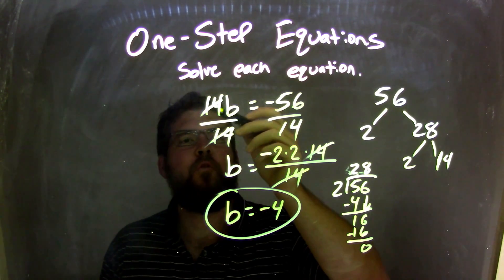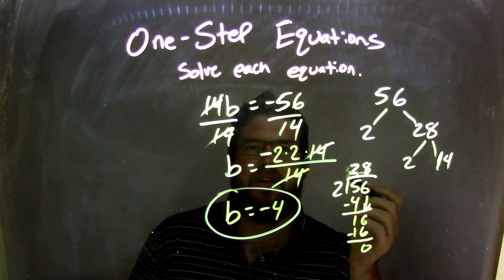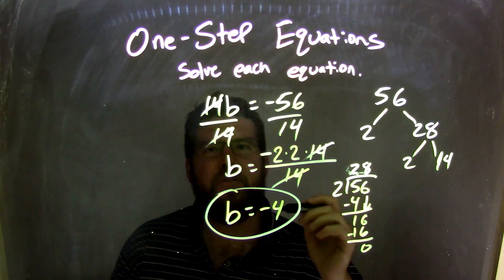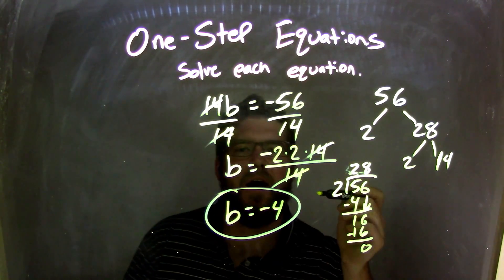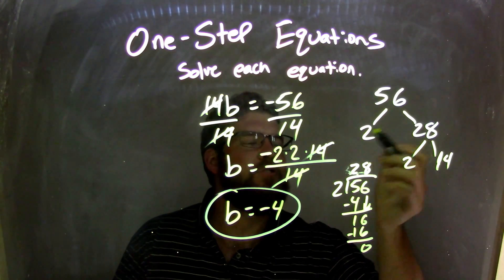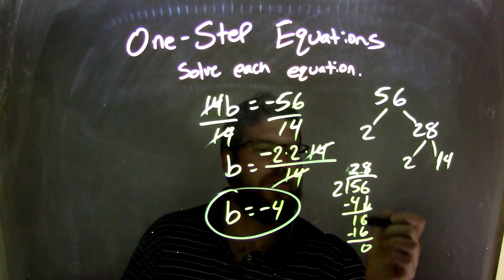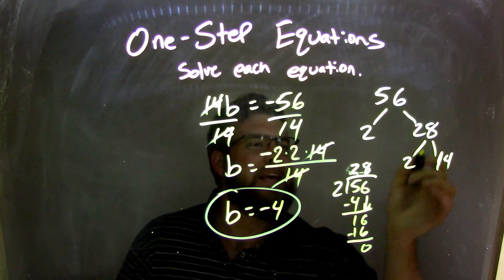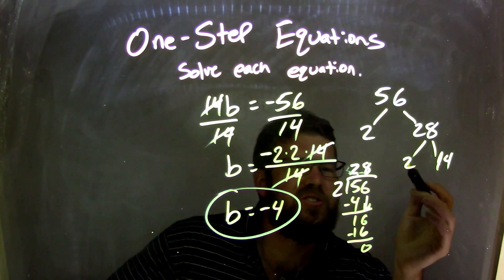So let's recap. I have 14b equals negative 56. Opposite of multiplication is division, so I divide by 14 on both sides. So we have negative 56 divided by 14. 56 I broke down to be 2 and 28. We were doing some long division here. 28 I saw to be 2 times 14.